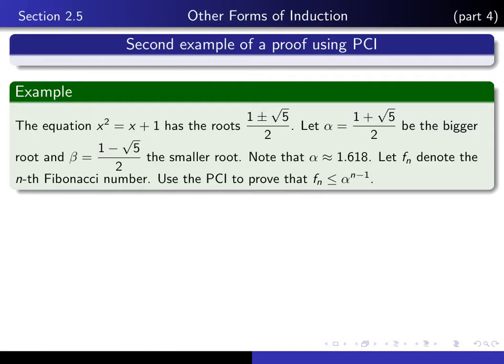If you actually calculate them, you'll see that alpha is something like 1.6 and beta is actually negative. We use the letter F sub n to denote the nth Fibonacci number, and your exercise is to prove that F sub n is less than or equal to alpha to the n minus 1.